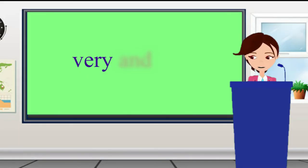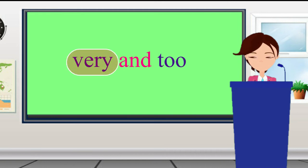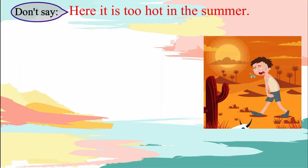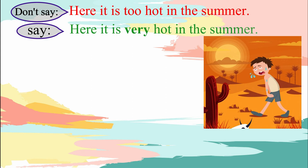Very and Too (T-O-O). Very simply makes the adjective or adverb stronger. Too means more than enough. For example, it would be wrong if we say: here it is too hot in the summer. What you should say is: here it is very hot in the summer.